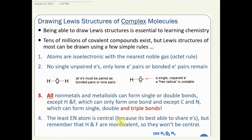Now we'll learn to draw Lewis structures of covalent molecules, starting simple and moving to more complex ones. The rules: ensure all atoms are isoelectronic with the nearest noble gas; no unpaired single electrons (no free radicals); all nonmetals and metalloids can form single or double bonds except hydrogen and fluorine, which can only form one bond; carbon and nitrogen can form single, double, and even triple bonds.